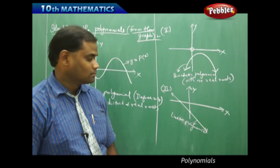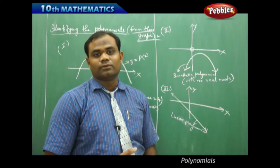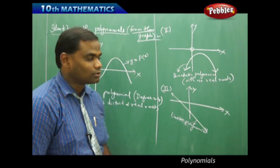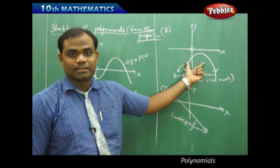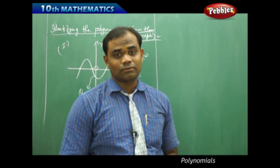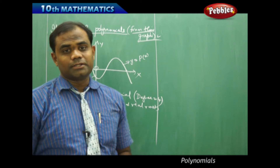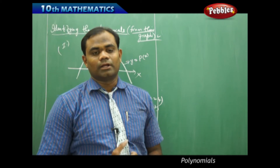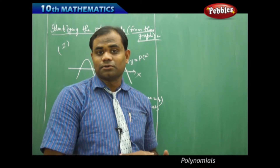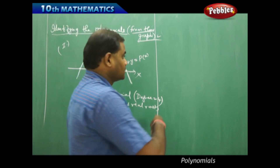That is how we understand different shapes through their degree and define the name of the polynomial — quartic, quadratic, and linear polynomials respectively. Now let's take an exceptional problem in which we identify the degree, the number of zeros, and the nature of zeros of a polynomial from its graph.